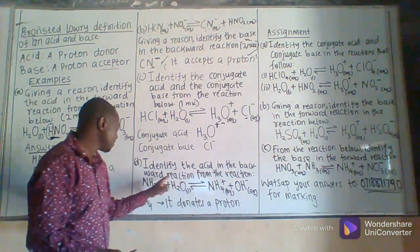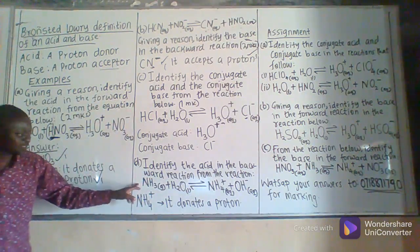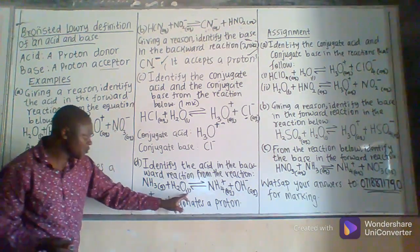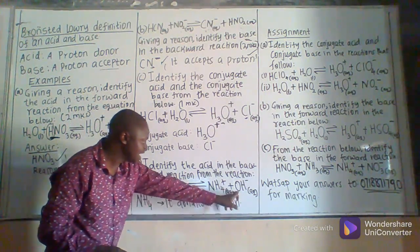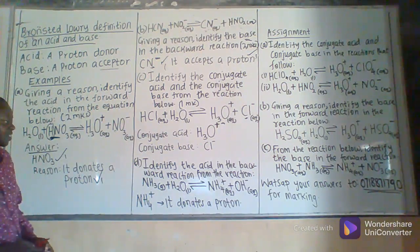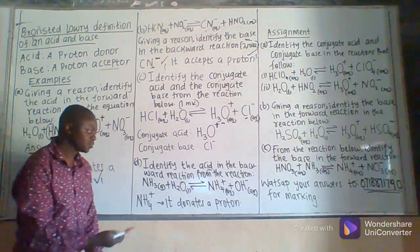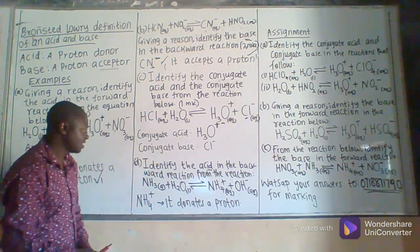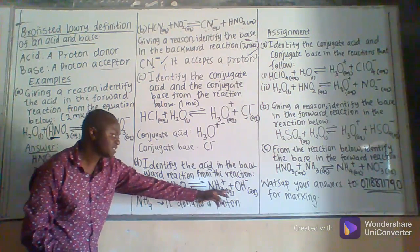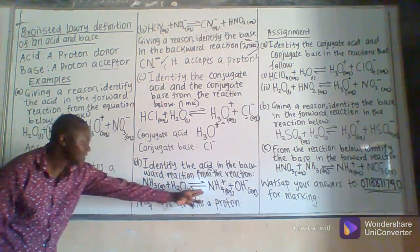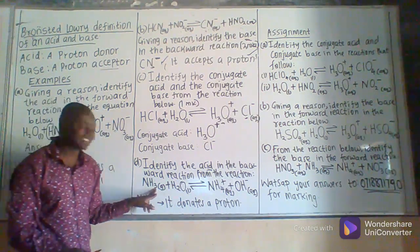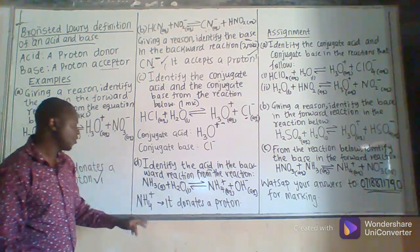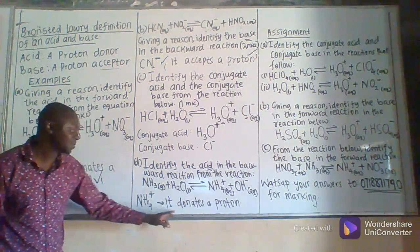Identify the acid in the backward reaction from this reaction: NH3 gas reacting with H2O liquid to form NH4 positive (aq) and OH negative (aq). We have been asked to identify the acid in the backward reaction, so we are going to consider NH4 positive and OH negative — the one that is going to donate a hydrogen atom. When we look at NH4, before the backward reaction it is having four hydrogen atoms, but after the backward reaction it is having three hydrogen atoms, meaning it has donated a hydrogen atom to OH. So OH becomes H2O, and NH4 positive is the acid in the backward reaction because it donates a proton.